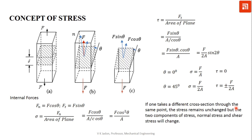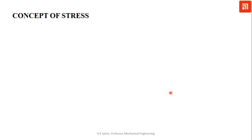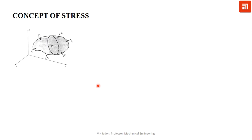If we take different planes at the same point, the stress remains unchanged but the two components will change. From these two special cases — theta equal to zero and theta equal to 45 — we can observe this behavior. The more general case of the stress concept can be explained when we consider a rigid body in 3D.